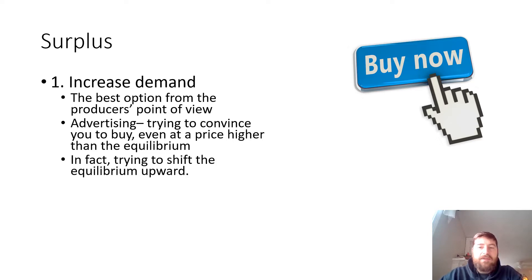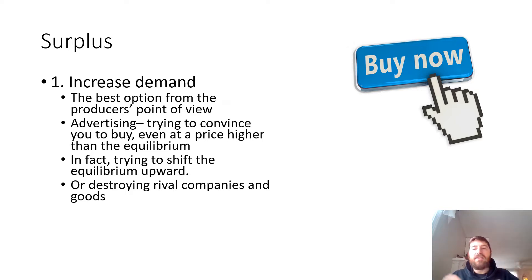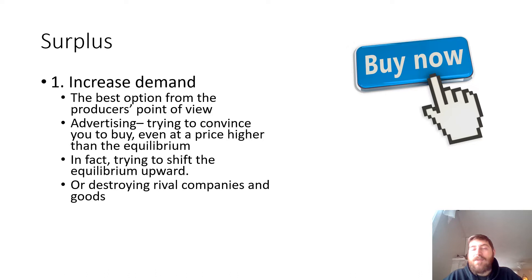Trying to shift the equilibrium upward by making people buy things they would not normally buy is one unethical approach. Another unethical thing is trying to destroy rival products and goods. If another company is producing a similar or the same good that is part of the surplus, destroying your rivals leaves more customers for you. It's part of business to try to out-compete rivals, but we need to be careful about how we do that.